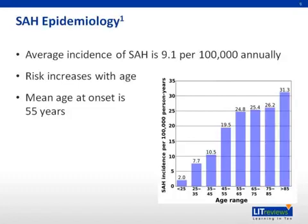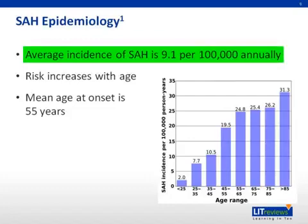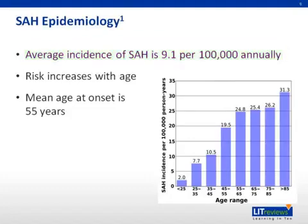Epidemiology. The prevalence of intracranial saccular aneurysms by radiographic and autopsy series is 5%, or 10 to 15 million people in the United States. Approximately 20 to 30% of patients have multiple aneurysms. The average incidence of subarachnoid hemorrhage is 9.1 per 100,000 annually. Studies from different countries have shown differing rates as high as 22.7 per 100,000 in Japan, down to 4.1 per 100,000 in some South and Central American countries. In North America, this translates into approximately 30,000 subarachnoid hemorrhages per year.